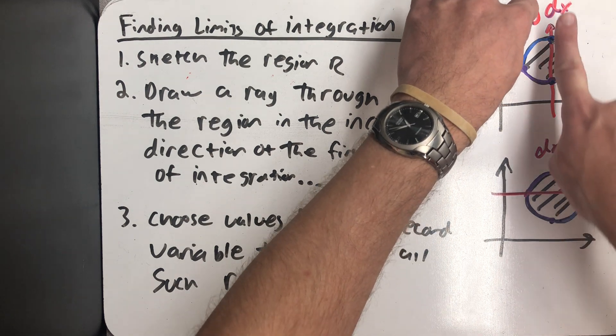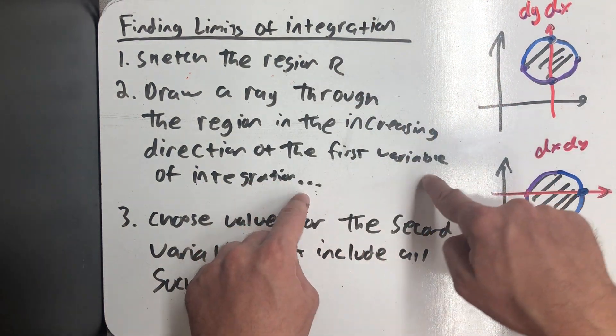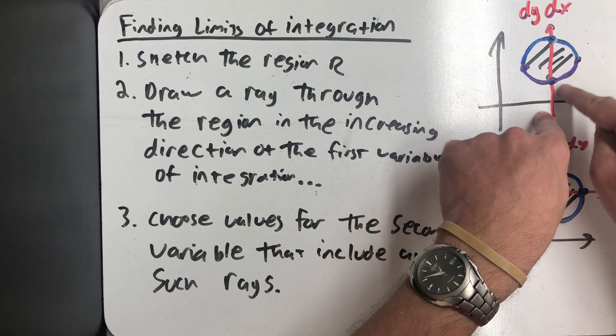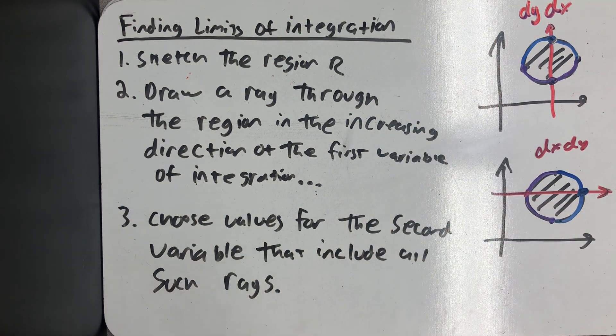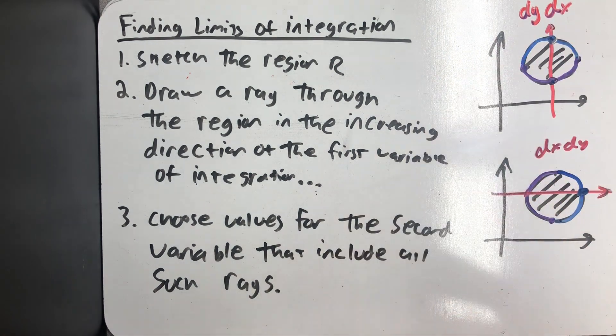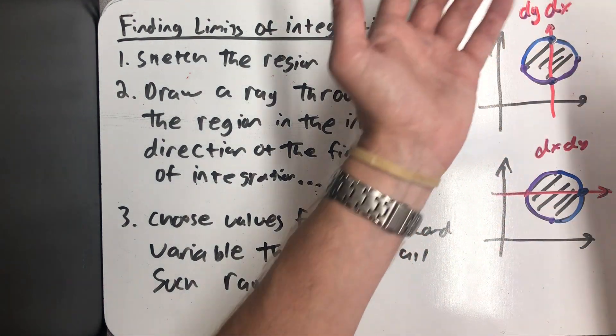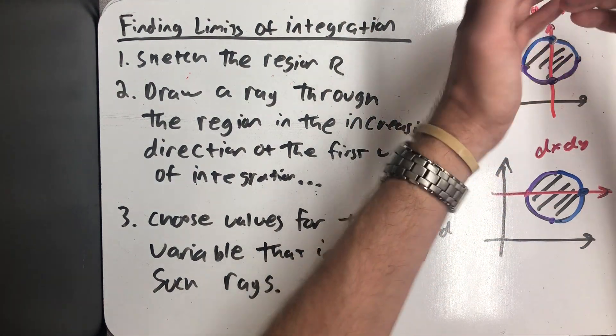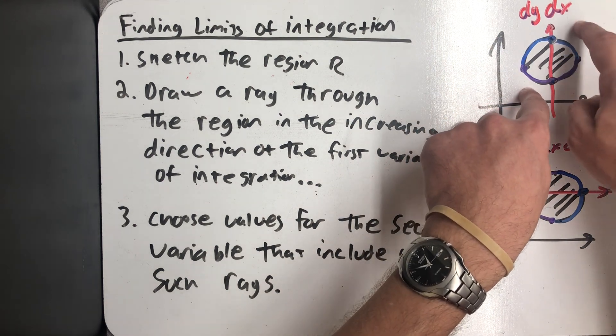In the increasing direction of y, where we enter the region becomes our lower limit of integration, and where we exit becomes our upper limit of integration. So for functions that model a top and a bottom, I have a bottom function and then a top function.